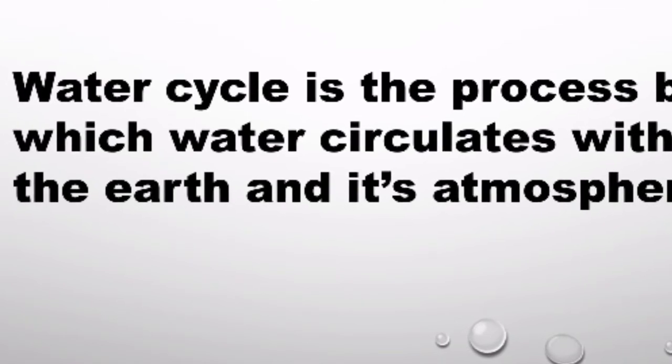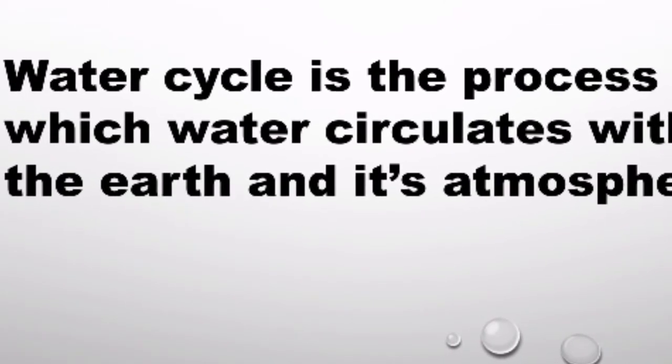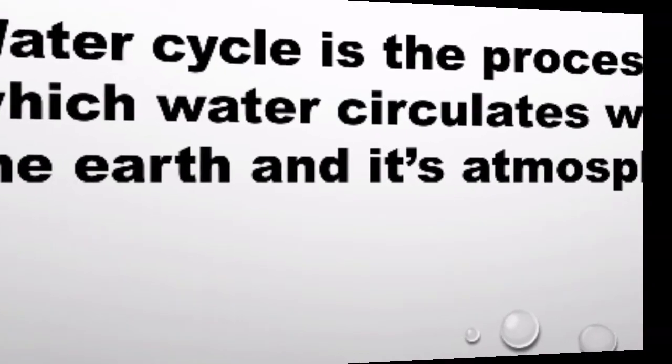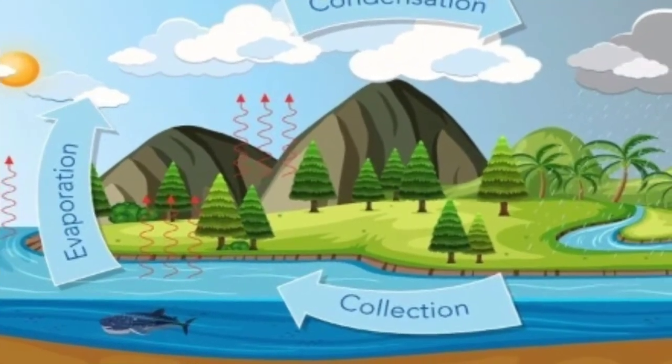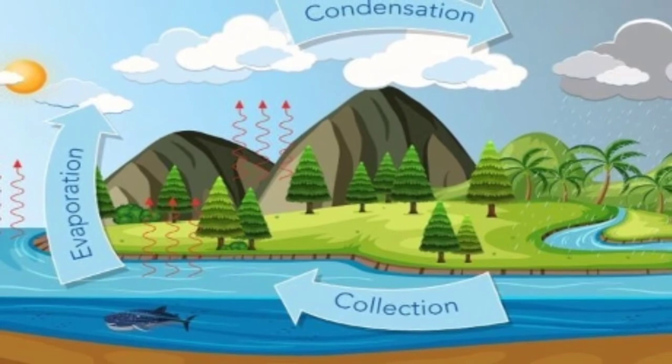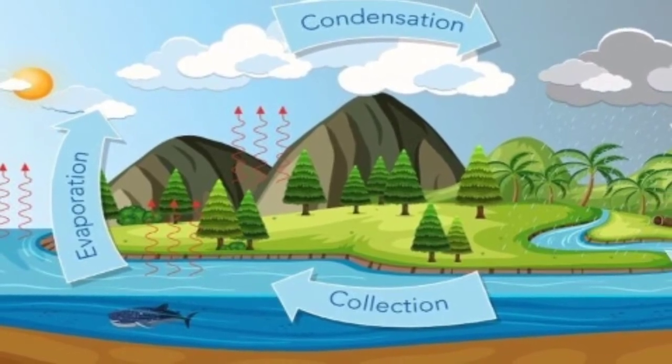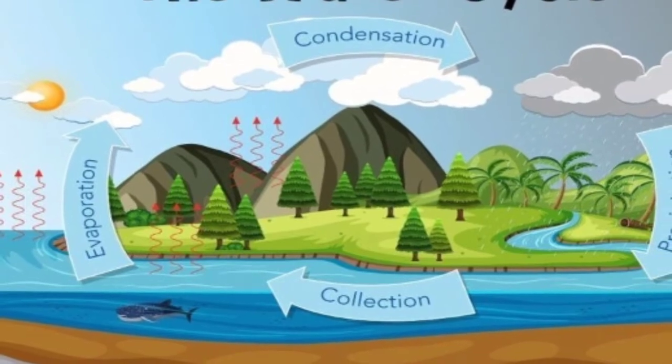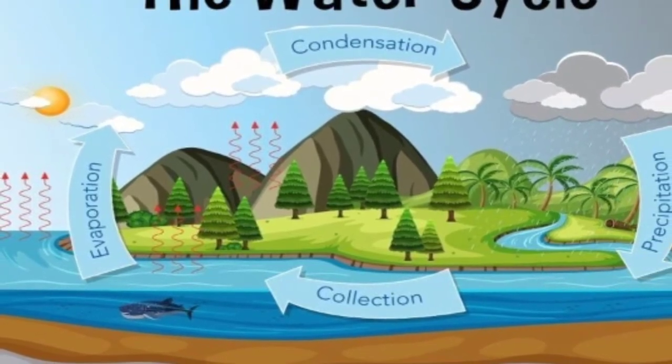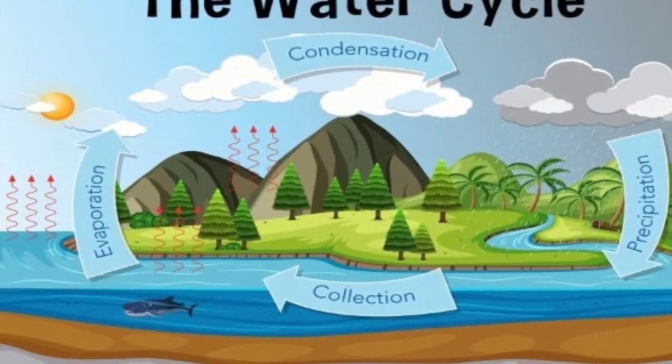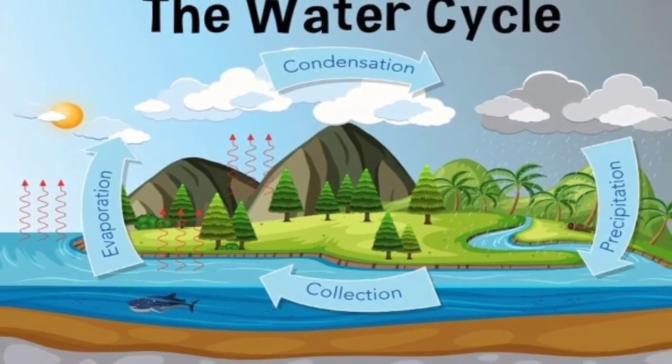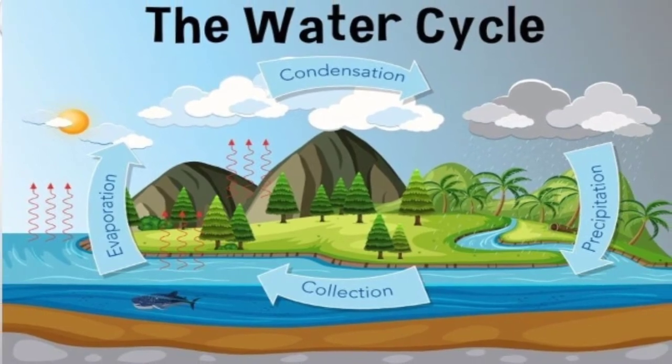Water evaporates into water vapor, condenses to form clouds, and precipitates back to earth in the forms of rain and snow. The same cycle repeats again and again. Thus, the water cycle goes on and on in nature.